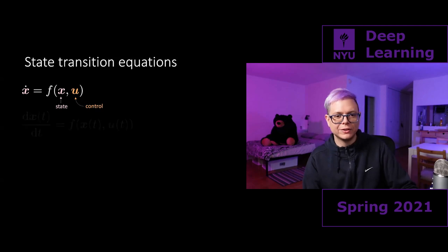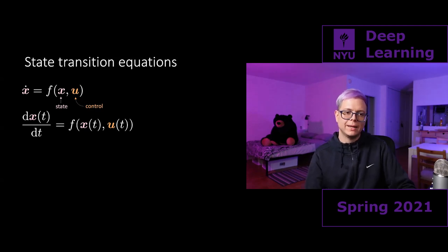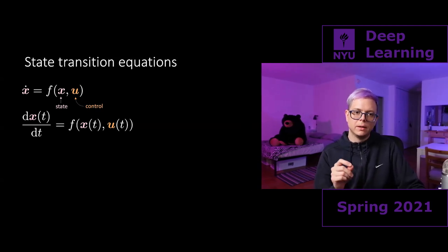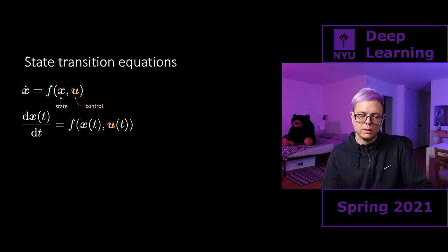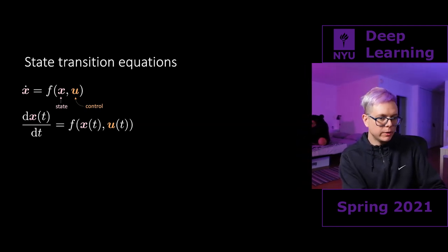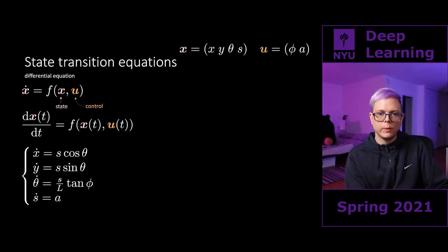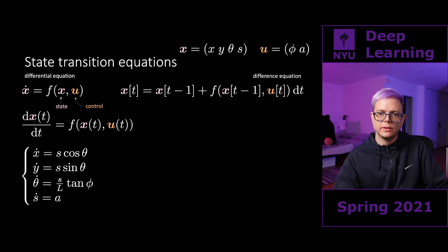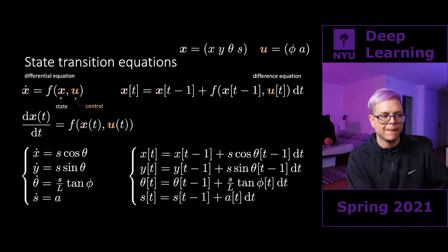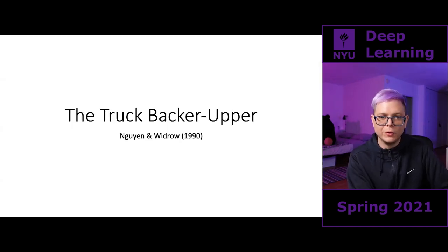We also defined that x-dot is the temporal derivative of the state x, and x and u are continuous functions of time. This gives us a differential equation. Then we introduced a discretization, which gives us a difference equation — and that's the corresponding version we work with.